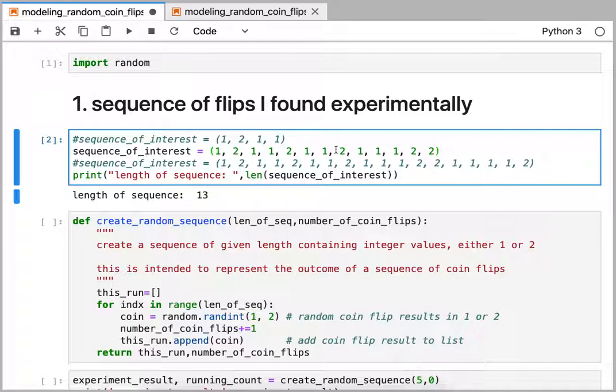I've got 13 coin flips and what I want to investigate is if I did another 13 coin flips, how often would I have to do that in order to find that same sequence?